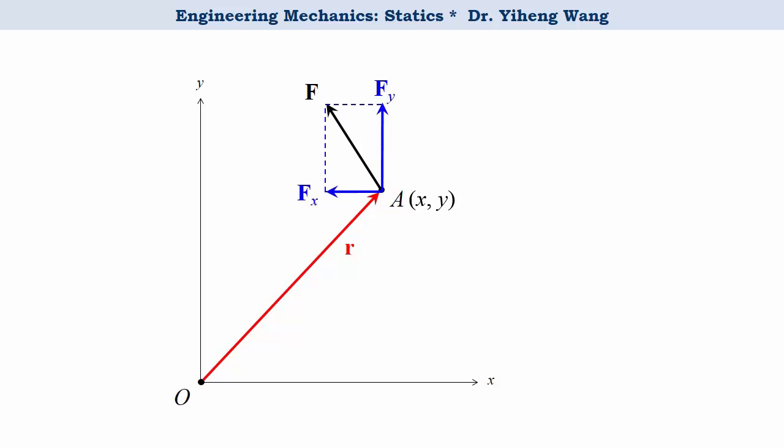Therefore, the calculation of the magnitude of the moment can be easily achieved to be Fx times its moment arm y plus Fy times its moment arm x. Note that the sign will change to negative if the force causes a clockwise rotational effect instead.